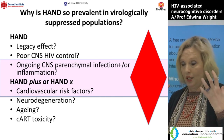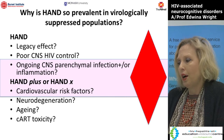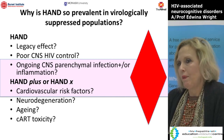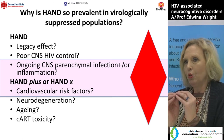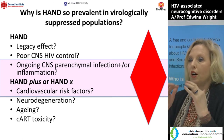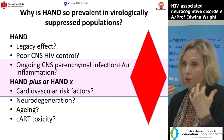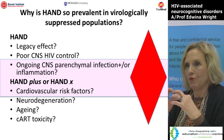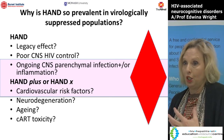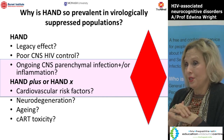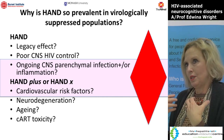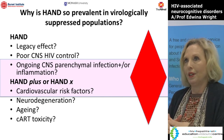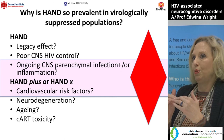A third hypothesis is that very low-level virus — perhaps one or two copies per millilitre — continues to turn over and replicate within brain tissue, driving ongoing inflammation and damage. Alternatively, even without active viral replication, HIV may have set up an inflammatory environment in the brain that keeps momentum going, leaving the brain in a state of persistent immune activation.